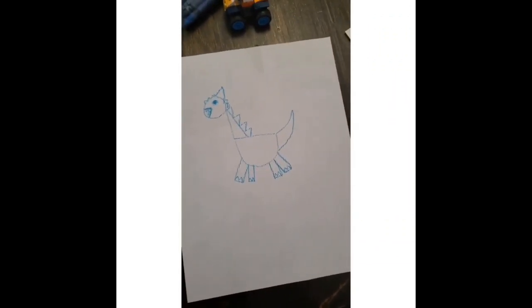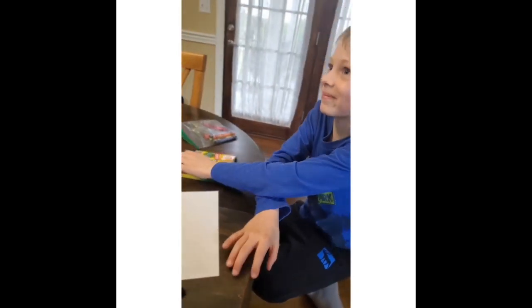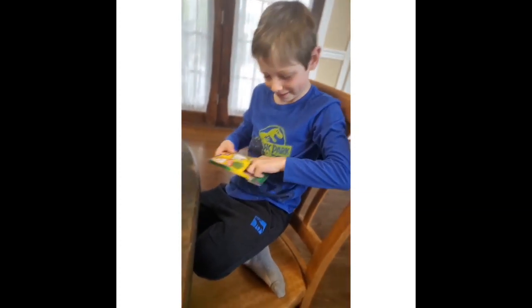Now you can either make your dinosaur a land dinosaur or a water dinosaur. So Drake, do you want to have a land dinosaur or water? Land. Okay, so he's going to draw some dirt down there.